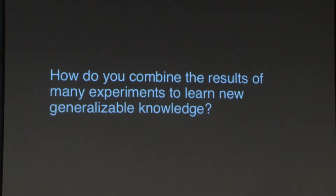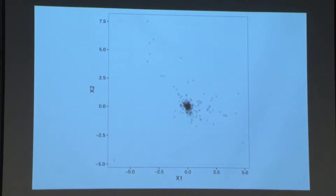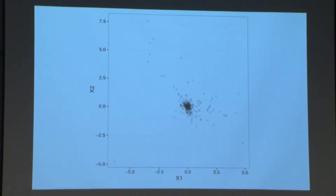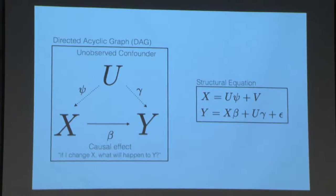The idea is to combine results of many experiments to learn new generalizable knowledge about causal models — how a series of mechanisms we affect through many different interventions affect the outcomes we care about. Each dot in this plot represents one experiment: the mean on mechanism x1, the mean on mechanism x2, and we want to use this information combined with outcome data to learn about the effects of x1 and x2 on y.